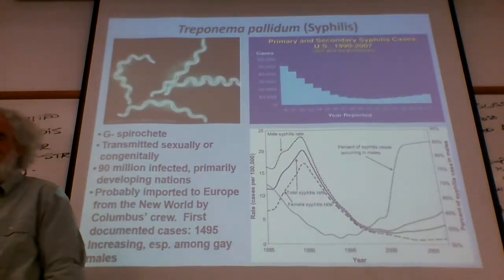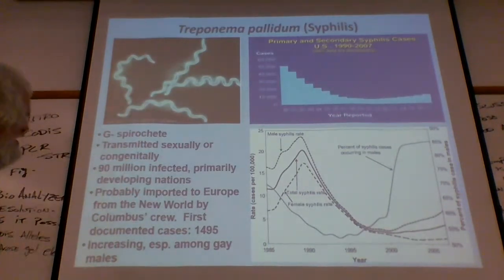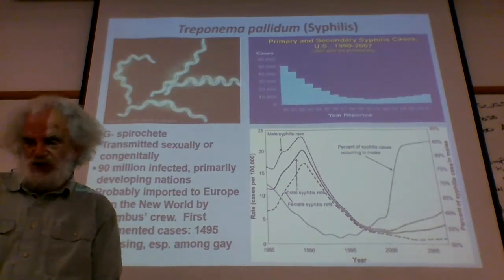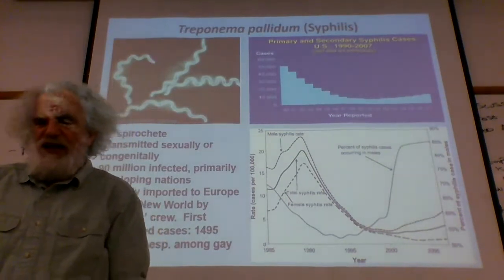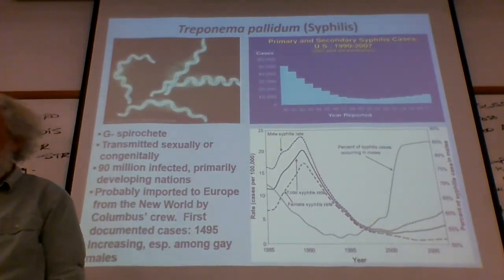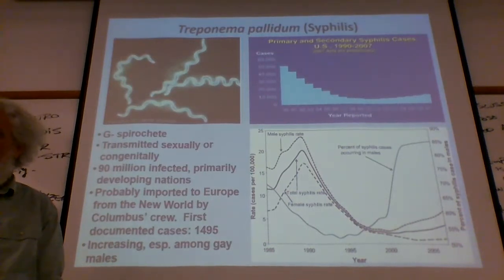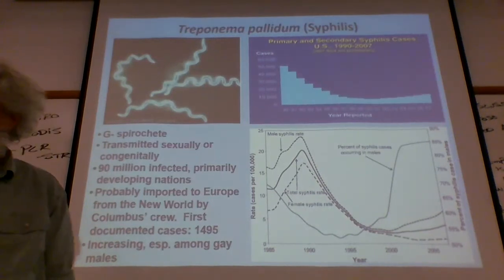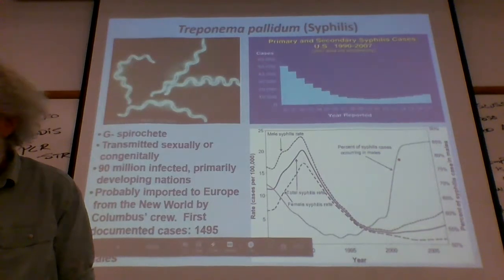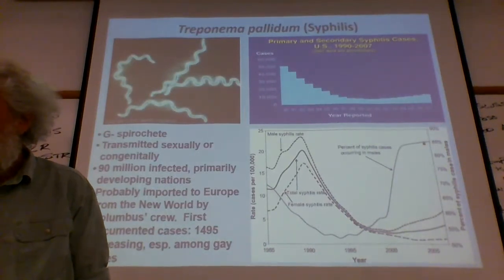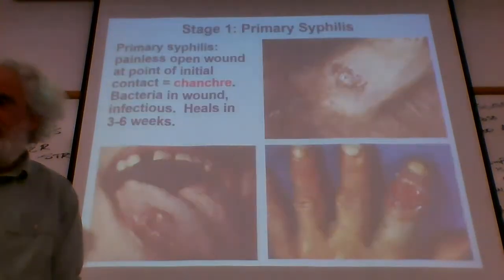Syphilis is a gram-negative spirochete — a cool little spiral shape. You can have it congenitally, meaning born with it, but it is primarily transmitted sexually. A large number of individuals are infected primarily in developing nations. It was probably brought to Europe from the New World by Christopher Columbus — the first documented cases appeared not long after they returned. It is increasing, especially among gay males. As you can see in the graph, the percent of syphilis cases occurring in males is quite high.